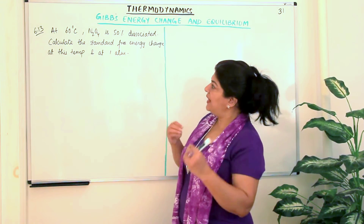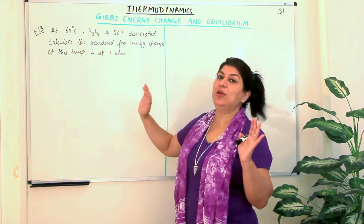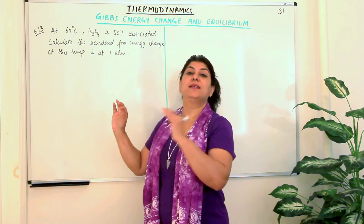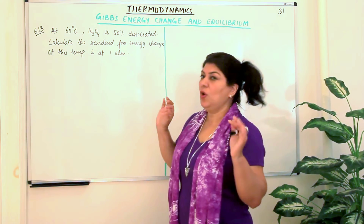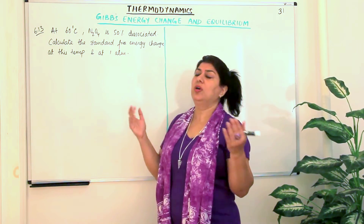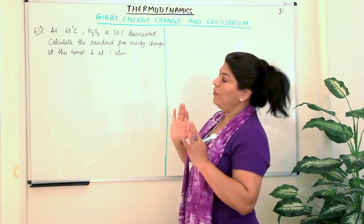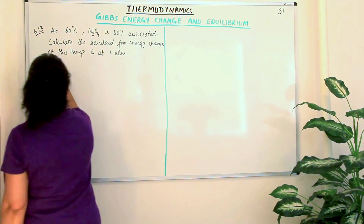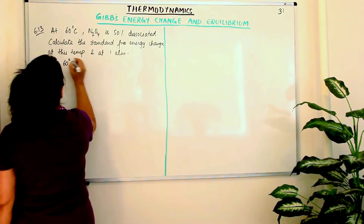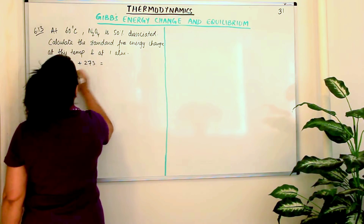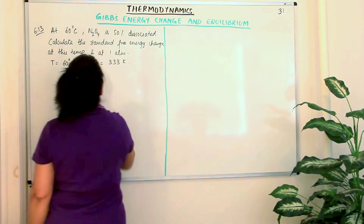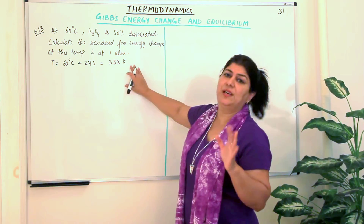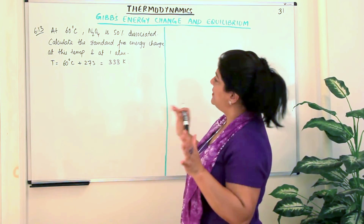The only equation we have relating Gibbs energy to equilibrium is delta G = delta H − T delta S = −RT ln K = −2.303 RT log K. The temperature given is 60°C, which must be converted: 60 + 273 = 333 K. Always use temperature in Kelvin. N₂O₄ is 50% dissociated, and we need to calculate the standard free energy change. Let's write the reaction equation: N₂O₄ (g) → 2 NO₂ (g).